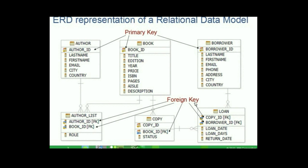The primary key of a relational table uniquely identifies each record in the table. A foreign key is a set of columns referring to a primary key of another table. Before moving on to the relational model constraints, let us learn two more terminologies. A table containing a primary key that is related to at least one foreign key is known as a parent table — in our example, the author entity is the parent table, and book is also a parent table. A table containing one or more foreign keys is known as a dependent table. In this diagram, the author list has two foreign keys that refer to two different parent tables.